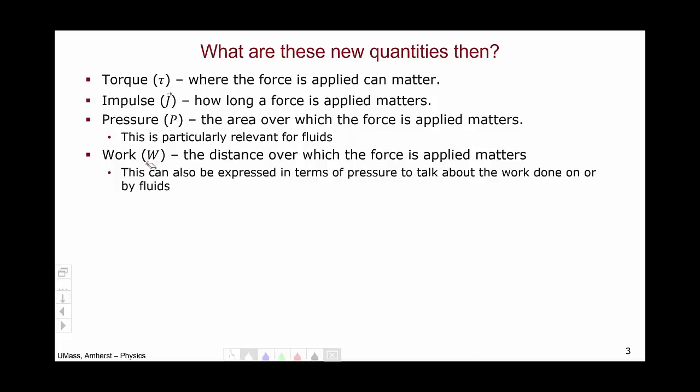Notice I've also provided you the symbols that I'm going to use when discussing these quantities. Torque is represented by the Greek letter tau, which is the Greek T. Impulse is represented by the letter J, and you can see already that impulse is going to be a vector quantity. Pressure is represented by the capital P and work, I will use the capital W.